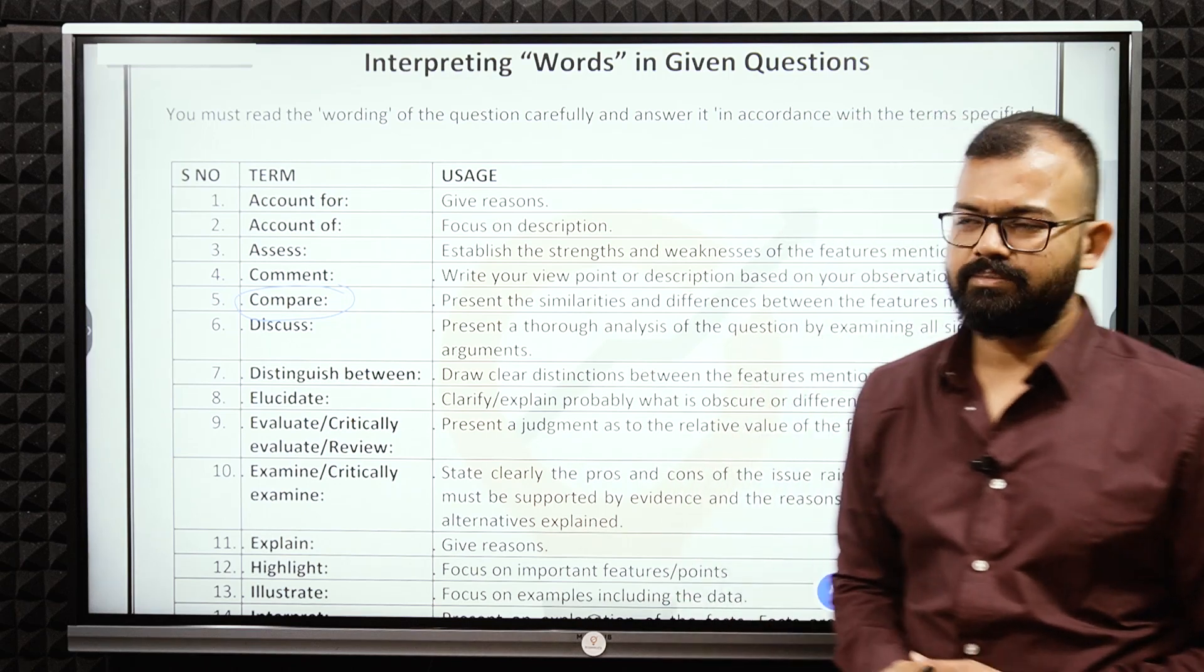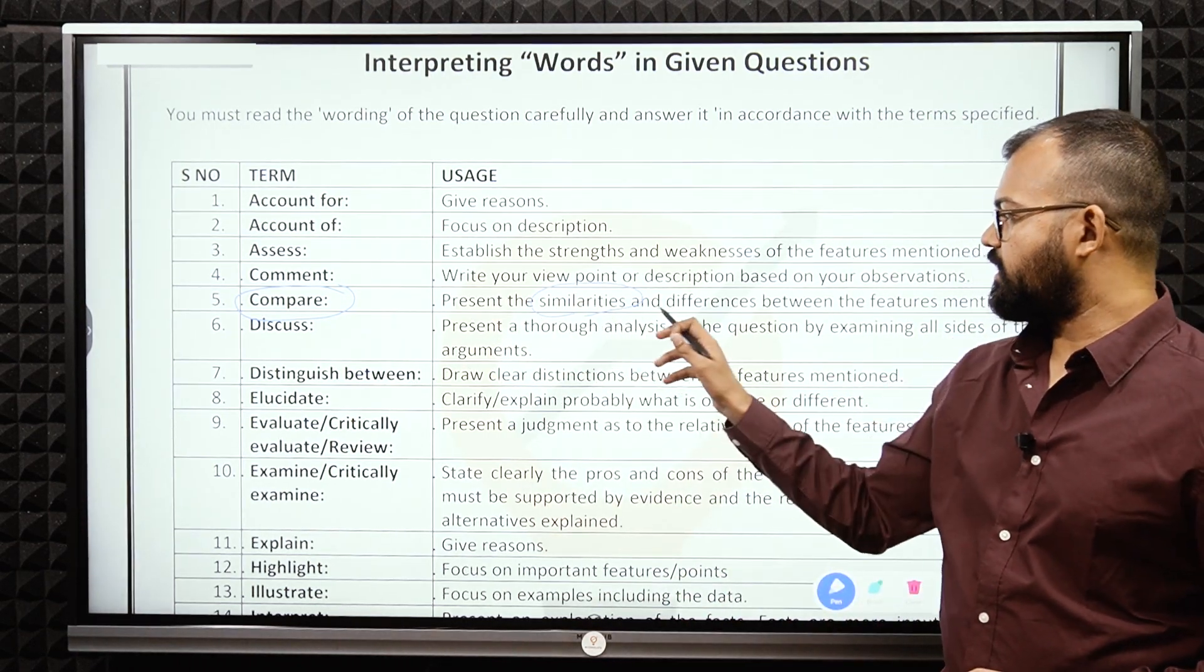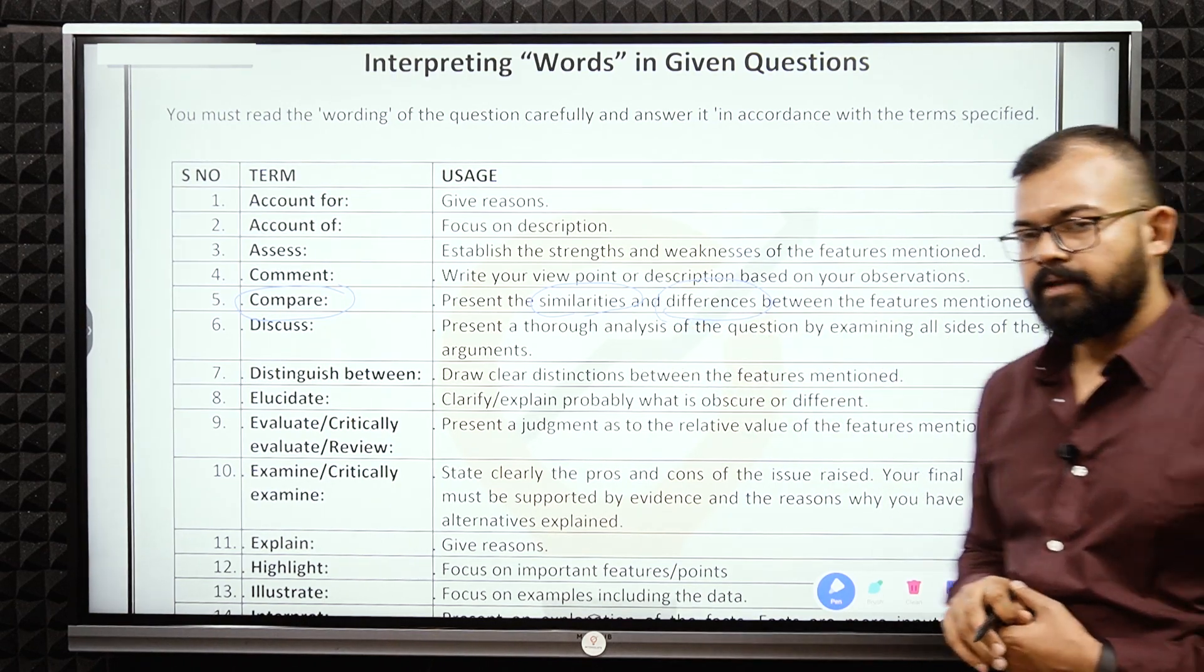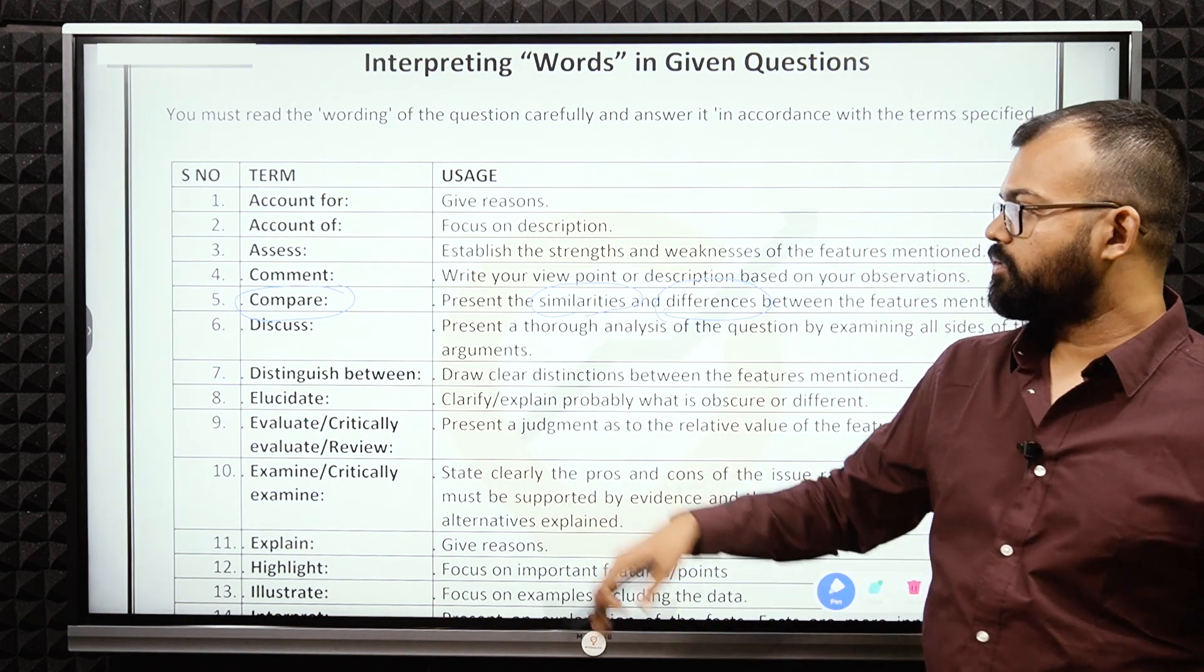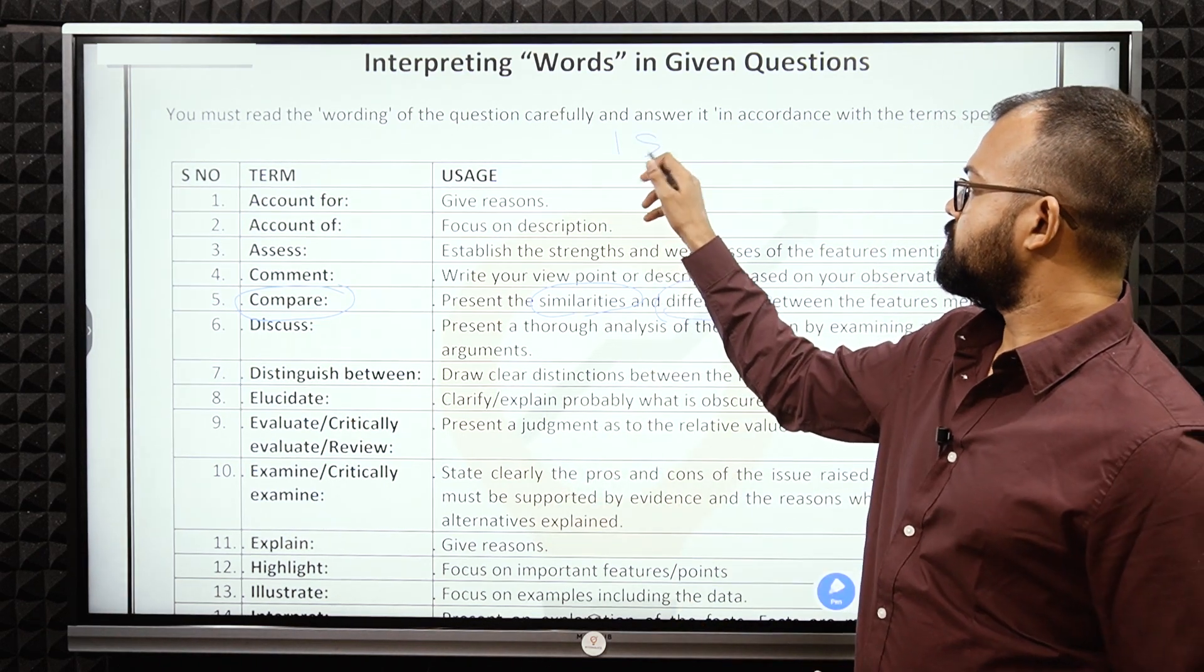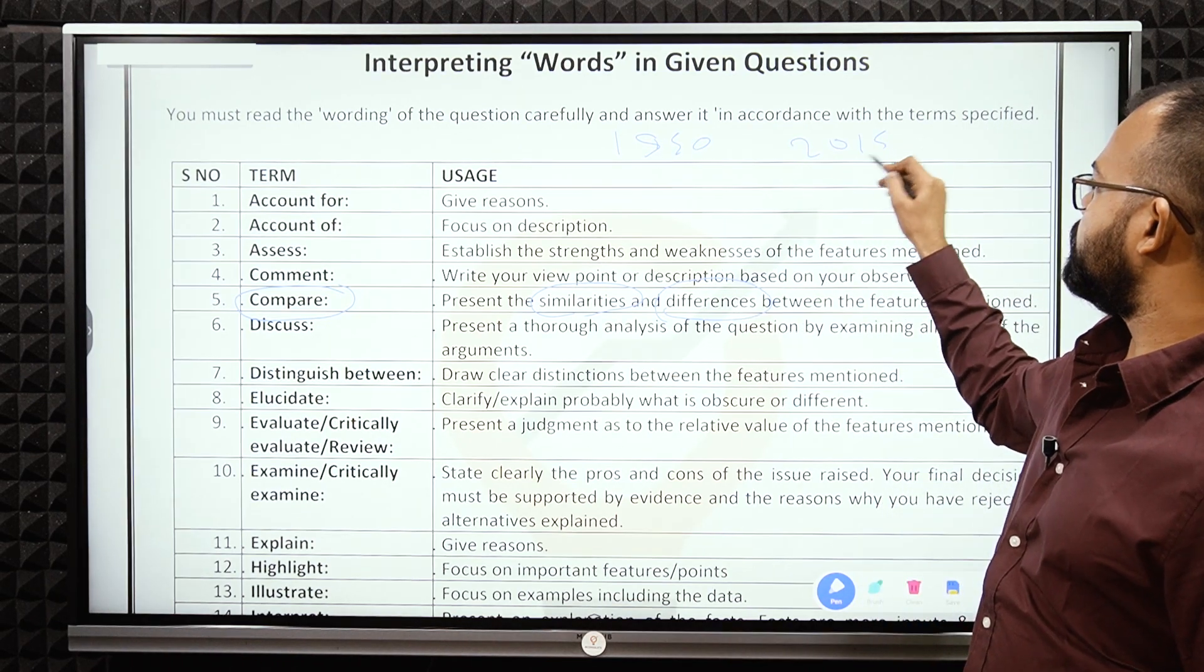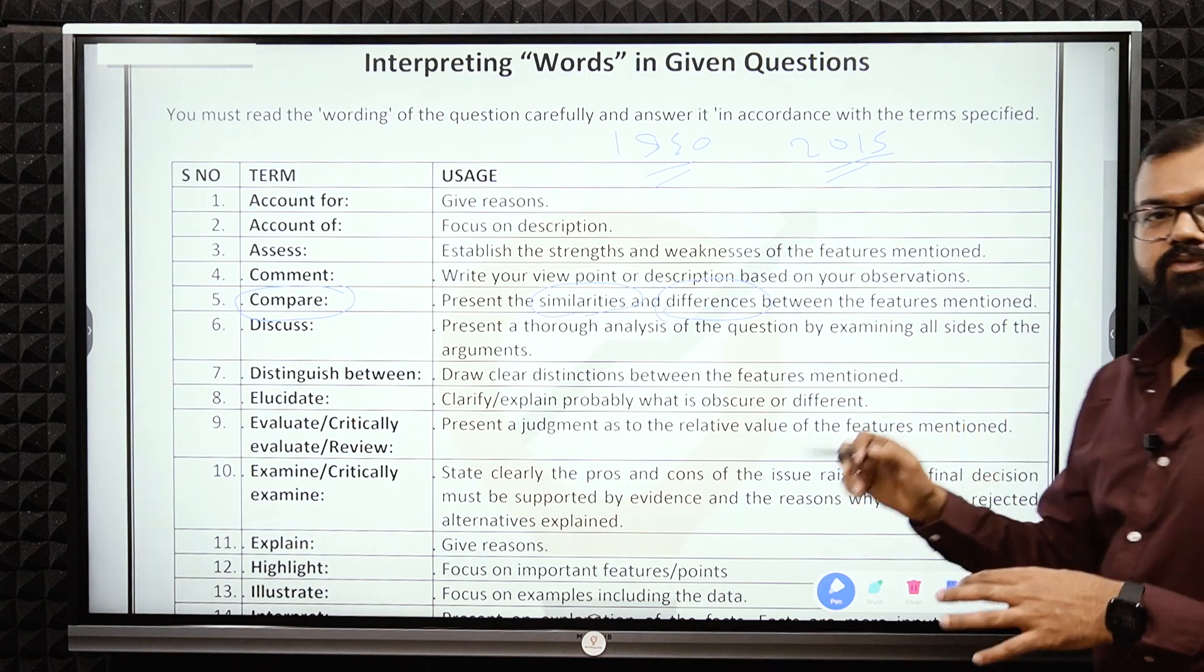Next one is compare. This is very simple. Here you have to present the similarities and differences between the features mentioned. Like compare the planning commission and Niti Aayog. Because we can compare these two. Planning commission started in 1950 and 2015 was Niti Aayog.